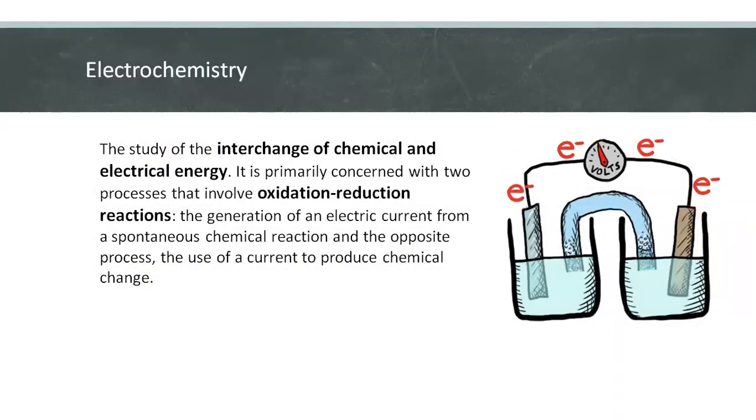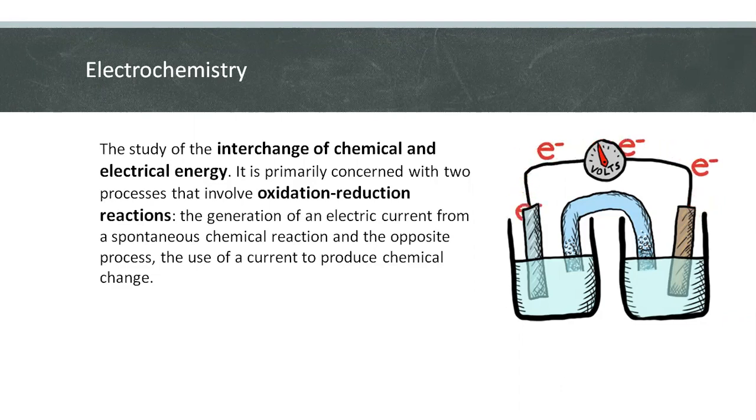Electrochemistry is best defined as the study of the interchange of chemical and electrical energy. It is primarily concerned with two processes that involve oxidation reduction reactions: the generation of an electric current from a spontaneous chemical reaction, and the opposite process, the use of current to produce chemical change.